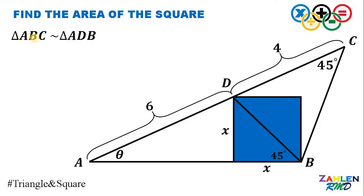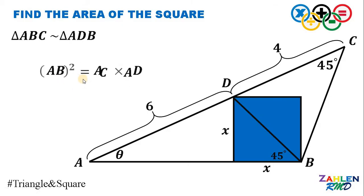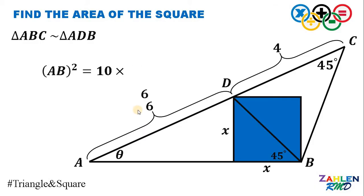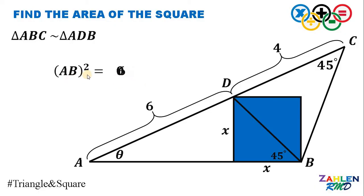Since they are similar, we can say that side AB over side AC must be equal to side AD over side AB. Simplifying this equation, AB squared must be equal to side AC times side AD. We know the value of side AC — this is just 6 plus 4, or simply 10. AD is also given — this is equivalent to 6 units. So 10 times 6 gives us 60; therefore AB squared must be equal to 60.